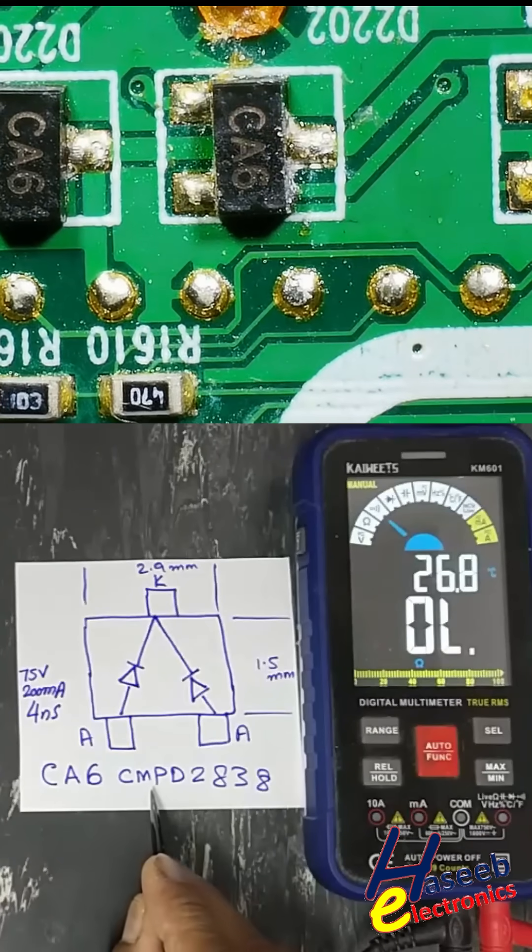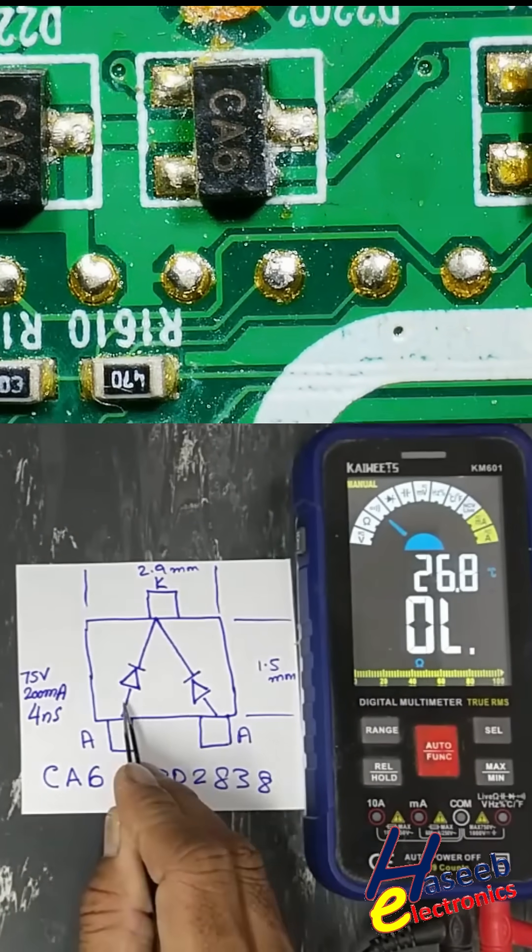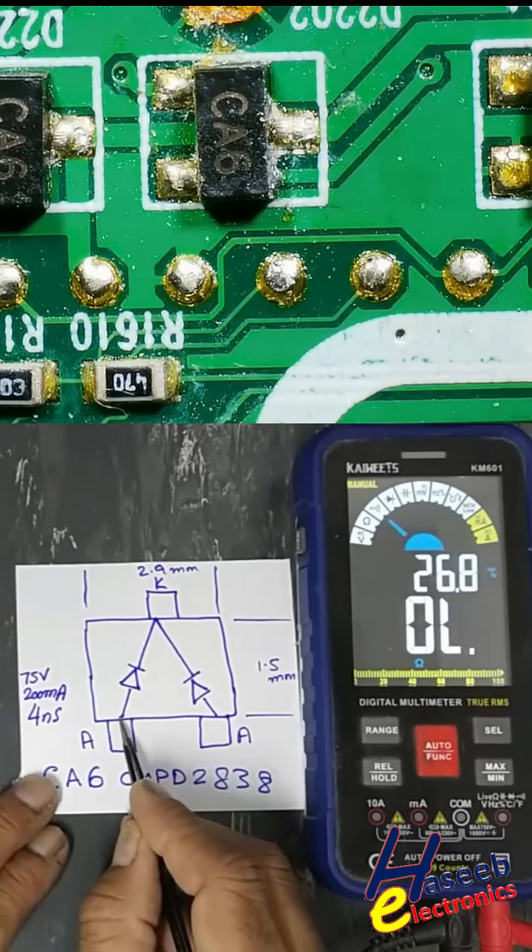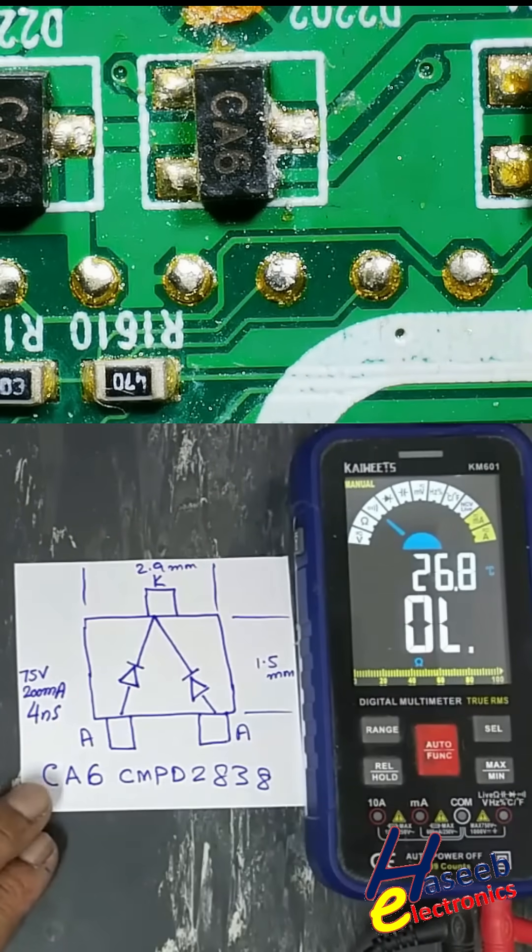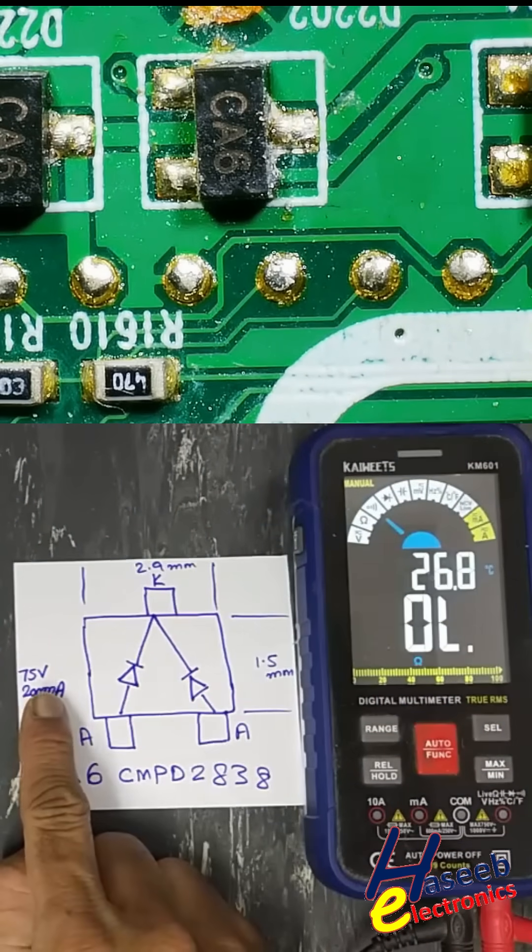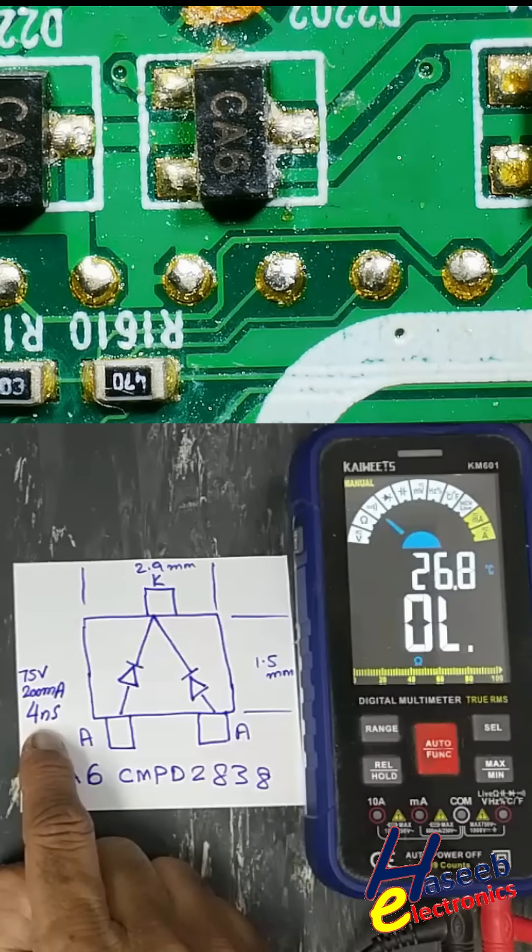It is CMPD2838 dual diode anode common cathode package, 75 volt, 200 milliampere, 4 nanosecond recovery time.